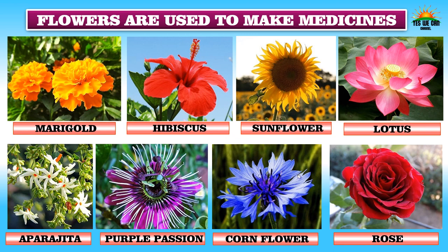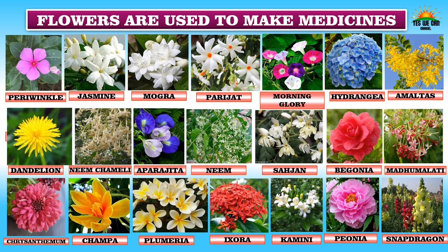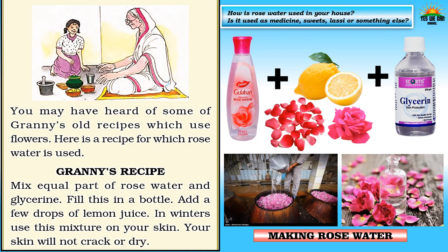Flowers are also used to make medicines. Some flowers used for medicines include marigold, hibiscus, sunflower, lotus, aparajita, purple passion, cornflower, rose, periwinkle, jasmine, mogra, parijat, morning glory, hydrangea, amaltas, dandelion, neem, chameli, sahajan, begonia, madhumalati, chrysanthemum, champa, plumeria, ixora, kamini, peony, and snapdragon.